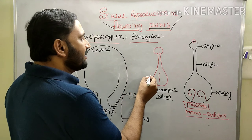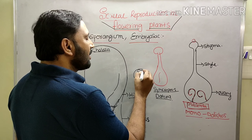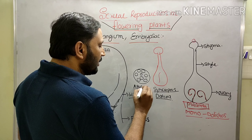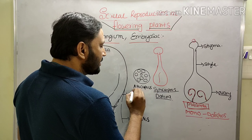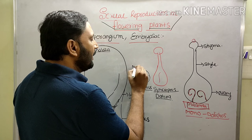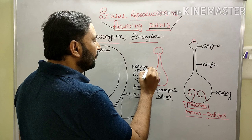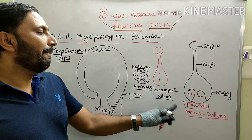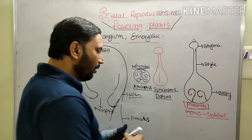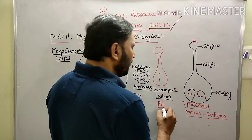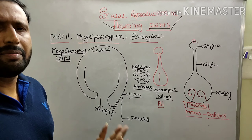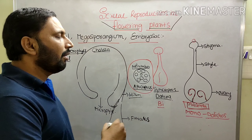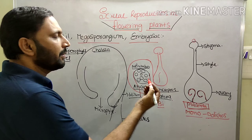In some cases, all the carpels are free on the thalamus — no fusion of ovary, style, or stigma. This is called Apocarpous gynoecium. Example: Nelumbo. So we have Monocarpillary, Bicarpillary, Tricarpillary, and Pentacarpillary gynoecia. In Nelumbo (Apocarpous gynoecium), all the carpels are free on the thalamus.